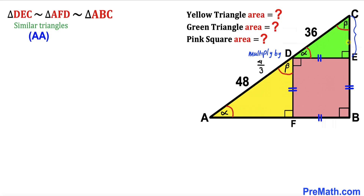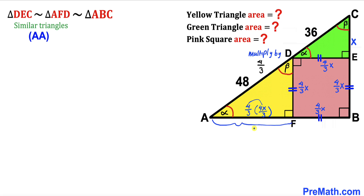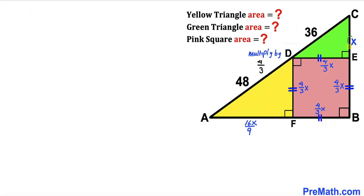Let's assume side EC is x. Then the corresponding side in the yellow triangle is (4/3)x. Since FBED is a square, all its side lengths equal (4/3)x as well. Applying the ratio again, segment AF turns out to be (4/3) × (4/3)x = 16x/9. Our next task is to find the value of x.